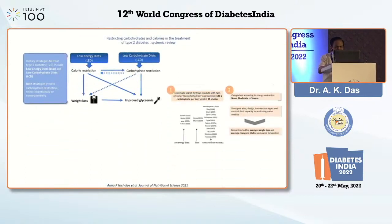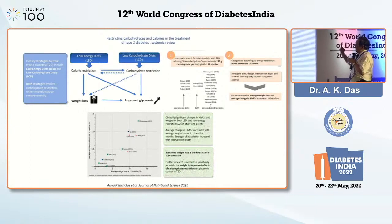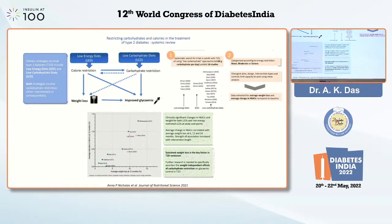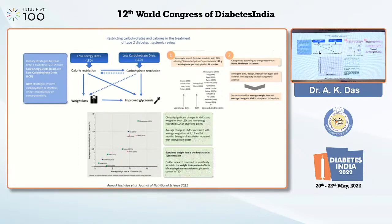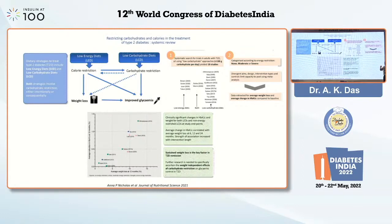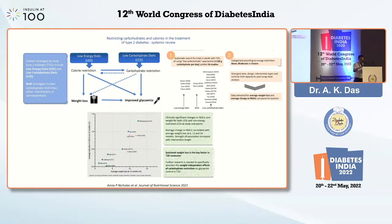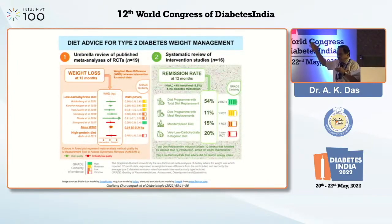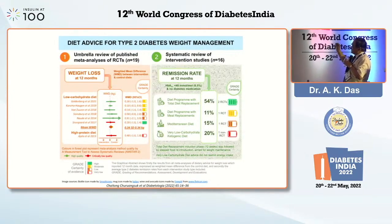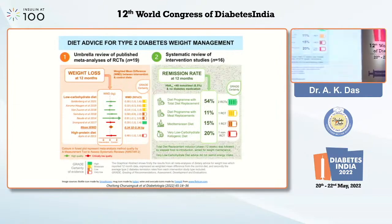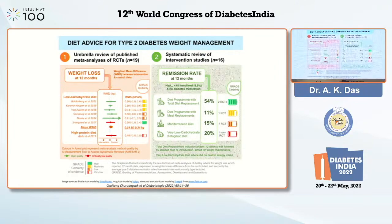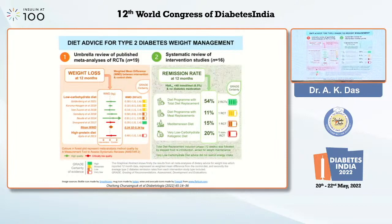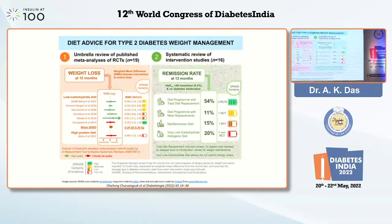There is a new concept for diabetes remission regarding distinct carbohydrate and calorie restriction in the treatment of type 2 diabetes, from a systematic review in the Journal of Nutritional Science, November 2021. Even time-restricted diet gives the same benefit as complete fasting. An umbrella review of 19 meta-analyses of diets, along with systematic reviews of 16 of them, showed remission rates varying between 20% and 54% — demonstrating the importance of diet.